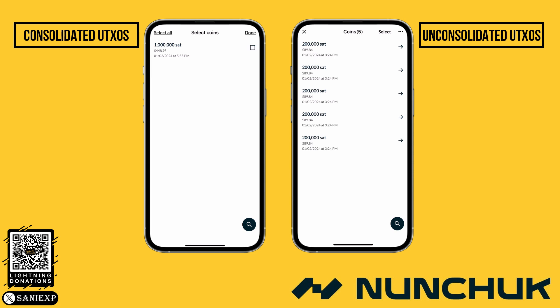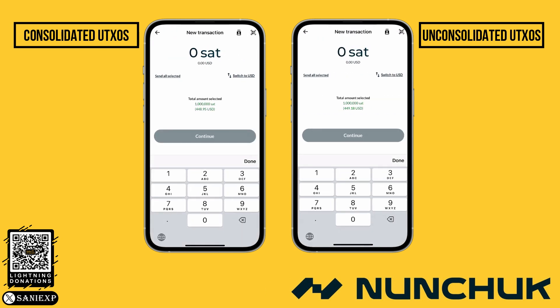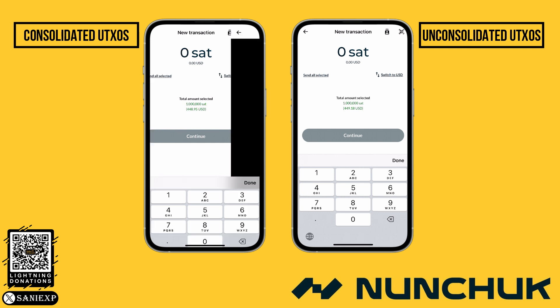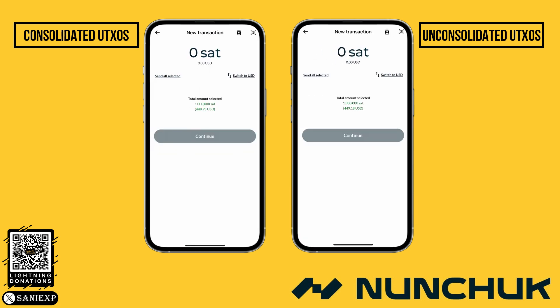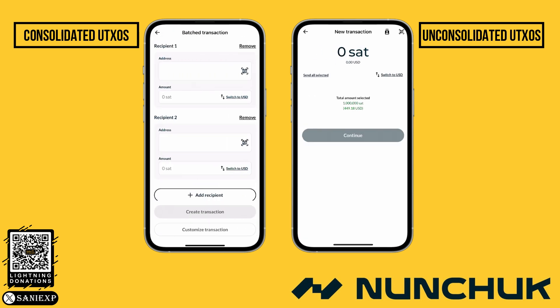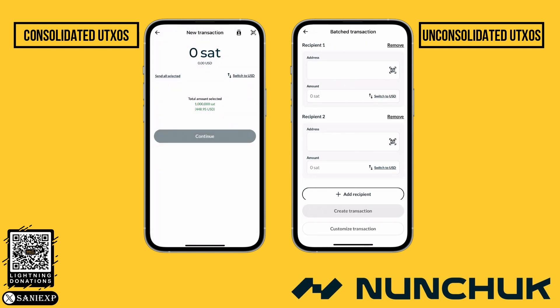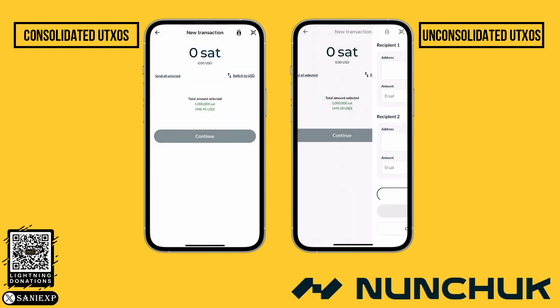On the top right, click Select and choose the UTXOs for the payment, then click Send at the bottom left. On the top right, you can scan the recipient's address via QR code. Alternatively, you can send to multiple recipients. If you have the address as text, don't worry, you can enter it in a later step.